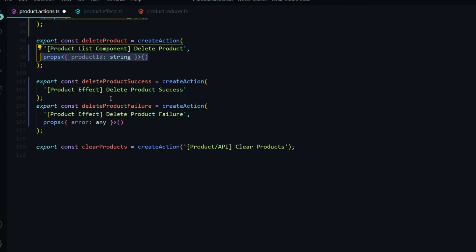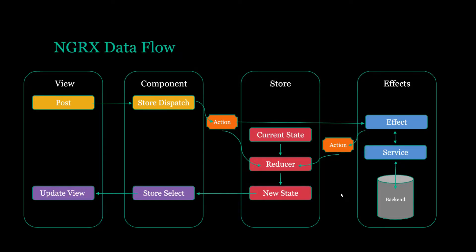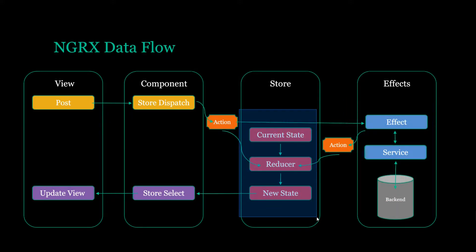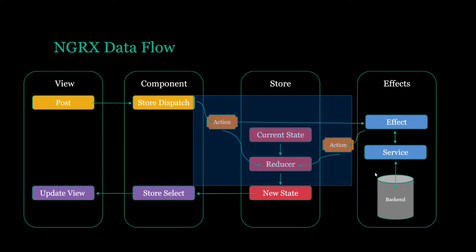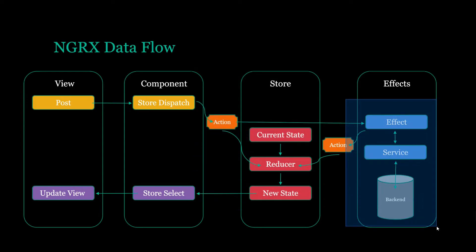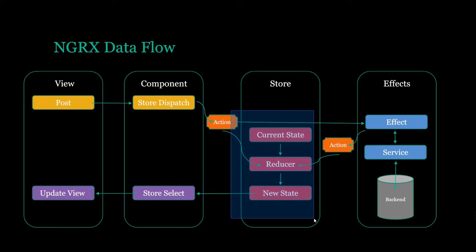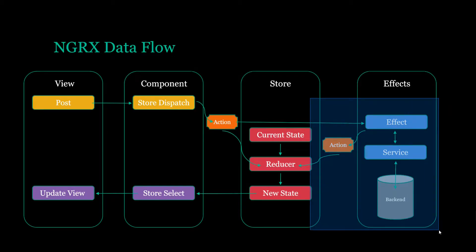The third action is dispatched from the product effect file, and you might notice a difference — we're not passing in a payload here. The reason is we're going to optimistically remove a product from the store. Rather than waiting for the backend to respond, we update the store immediately when the action is dispatched. This is called optimistically updating the store, versus pessimistically updating the store.